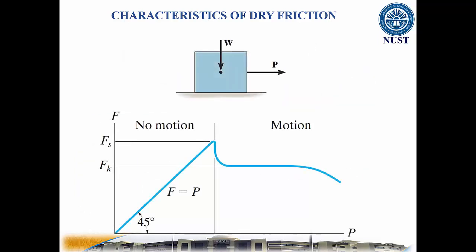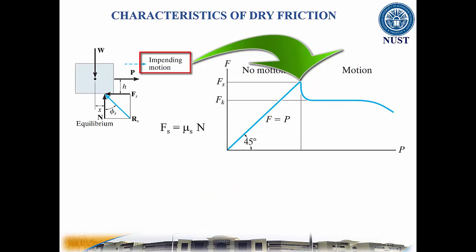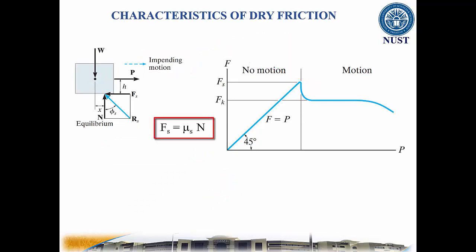To study the characteristics of the friction force, let us assume that tipping does not occur — such as H is small enough or A is large enough. Then we gradually increase the magnitude of the force P. Typically, experiments show that the friction force F varies with P. The maximum friction force is attained just before the block begins to move, a situation that is called impending motion. The value of the force is found using this equation.